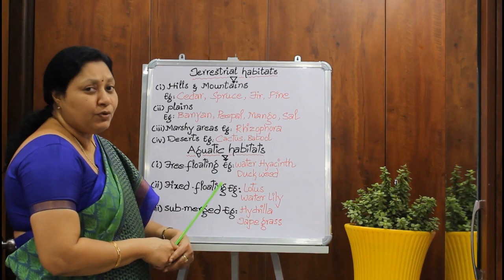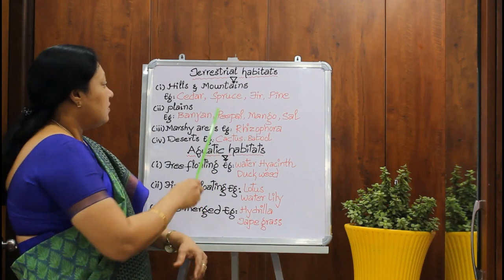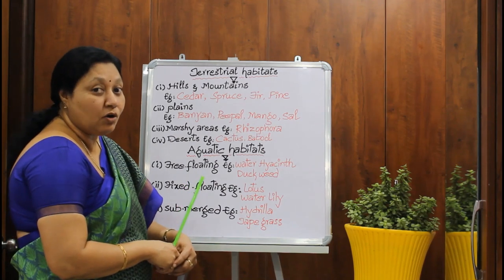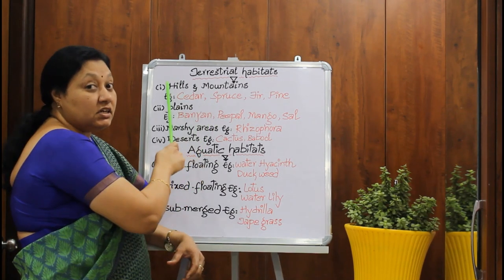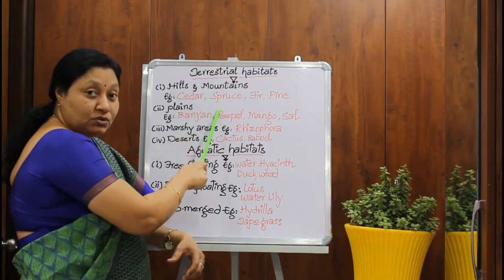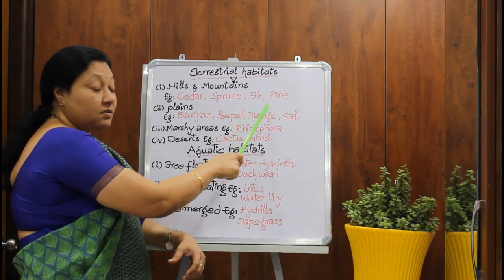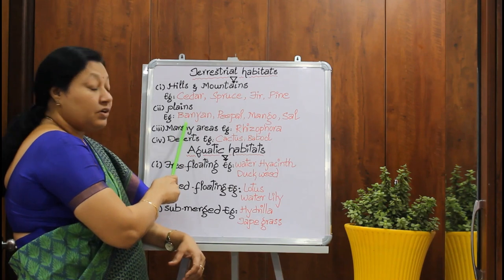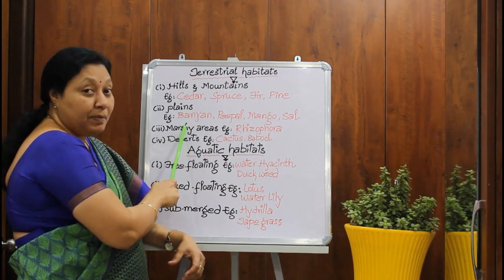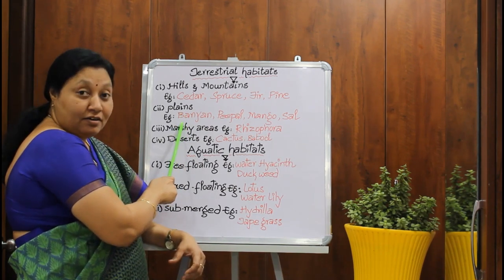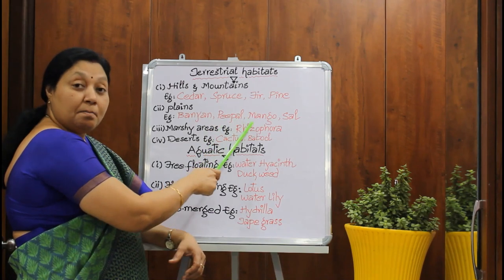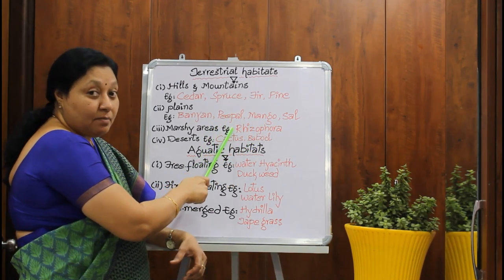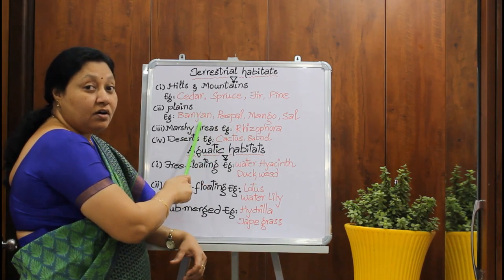Let us look at a few examples. The trees that grow on hills and mountains are cedars, spruce, fir, pine, etc. And the trees that grow on plains include banyan, peepal, mango, and sal. All these are the examples of trees that grow on plains.